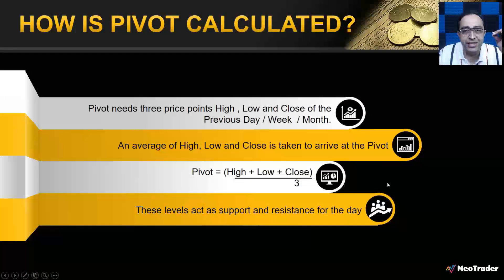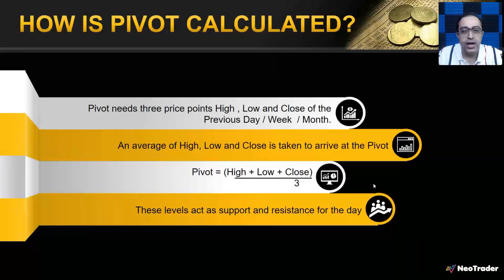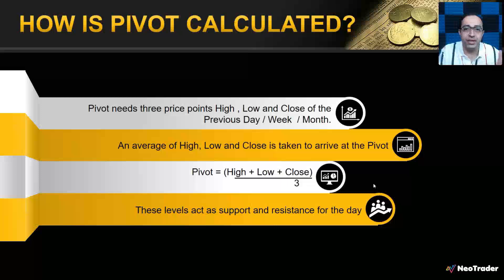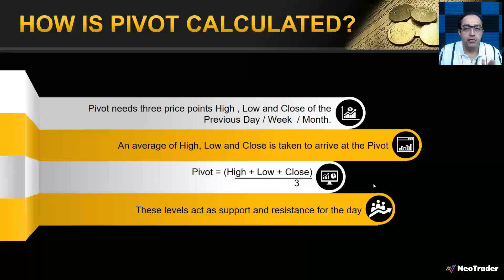Now, how is a pivot calculated? For calculating pivot you need three data points: high, low, and close. You calculate the average of the high, low, and close of the previous day. You can calculate a pivot for the previous day, previous week, or previous month. If you use a daily pivot, it's for intraday; a weekly pivot for multi-day positions; and a monthly pivot for positional trades.